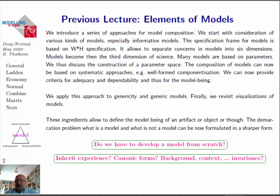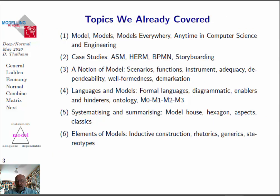We could somehow define the demarcation, or give a solution for the demarcation problem. Now we have to ask ourselves: do we have to develop a model all the time from scratch? Or can we maybe inherit experience, use some canonical forms, use the background, the context and the invariance? We have covered a number of topics already. Models are used everywhere. We have had a number of case studies used as our main examples. We have used a number of notions of models and found a notion of model we are using in this course. We considered the problem of language-based models — languages are great enablers, but also hinders. Last lecture we gave some insight into elements of models.